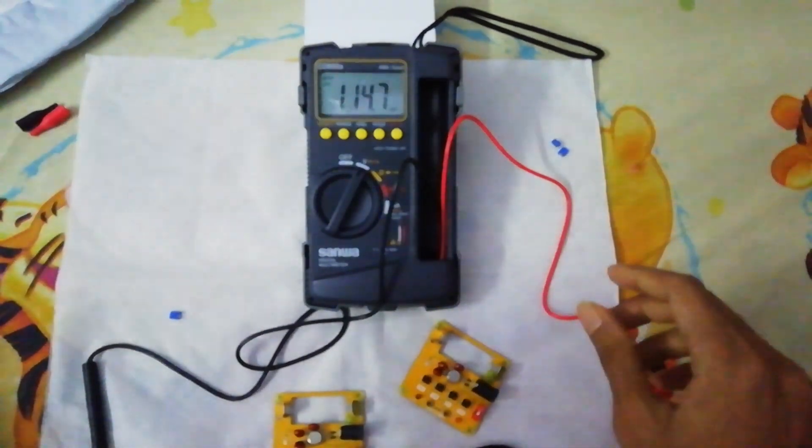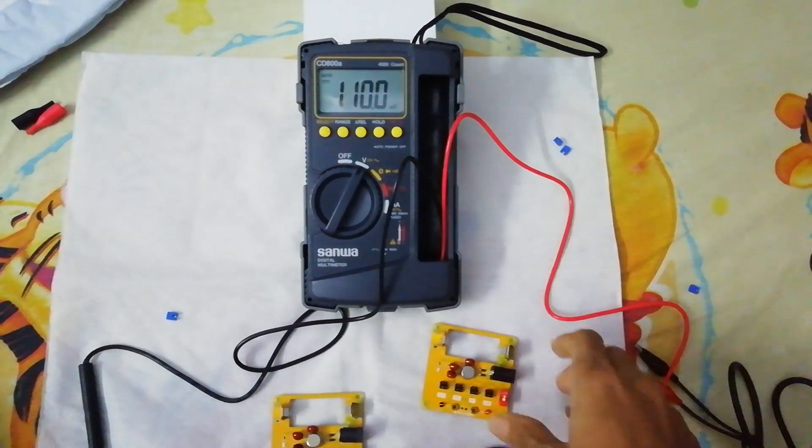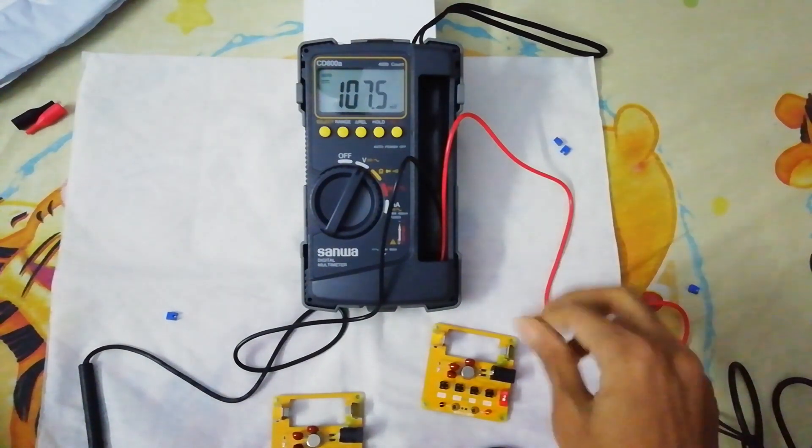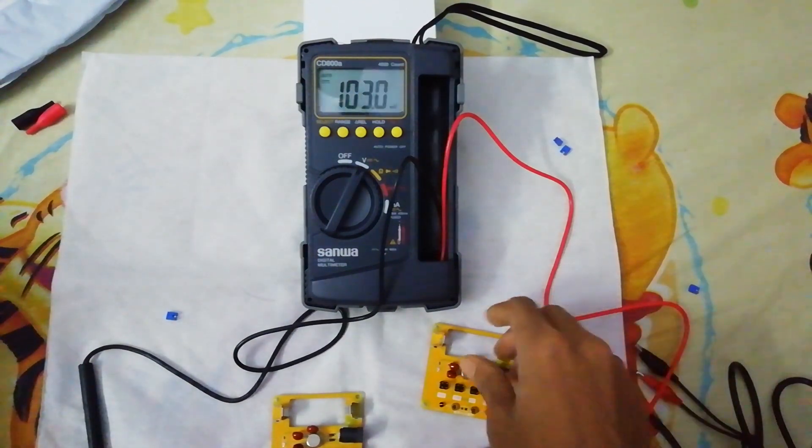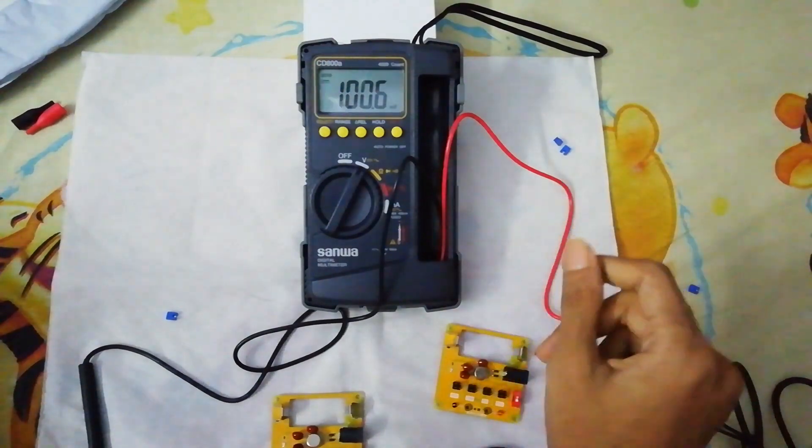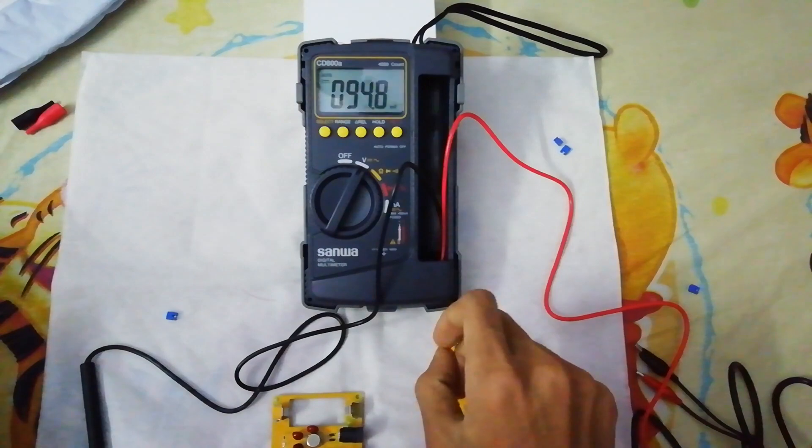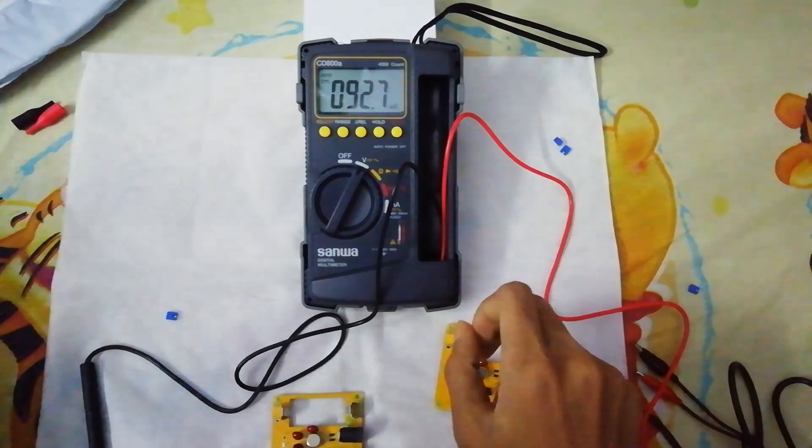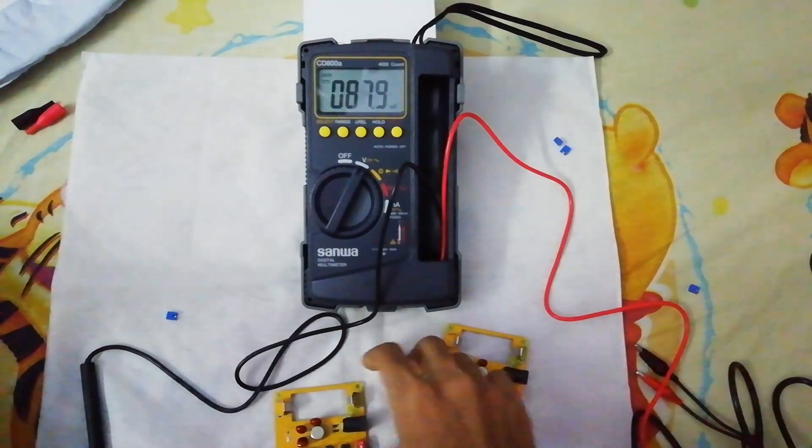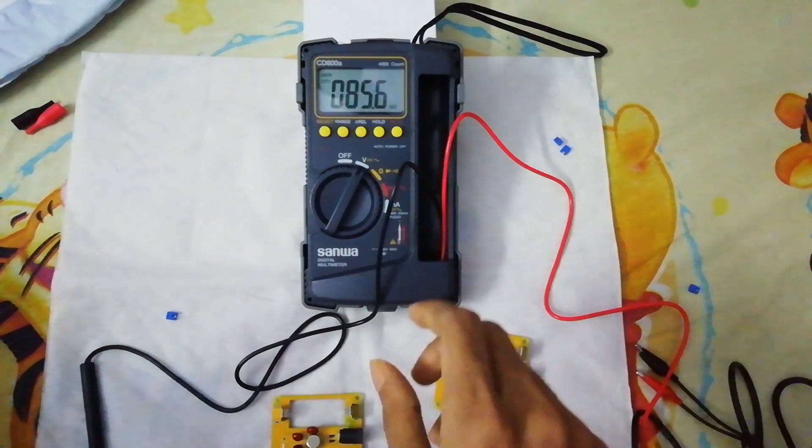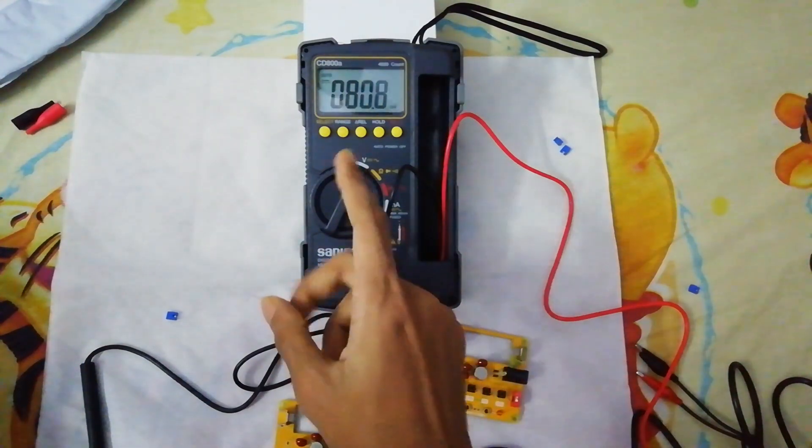So I said that this multimeter Sanwa CD800A is very accurate, not so accurate but it's okay. I think it's all in its specification. It is only 0.7 percent accuracy in DC voltage measurement, so it will do that job for me well I think.